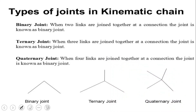Now we will discuss the types of joints in a kinematic chain. Types of joints are totally divided into three: one is binary joint, the second one is ternary joint, and the third one is quaternary joint. We already discussed types of links — binary, ternary, and quaternary — but here we are discussing about the joints.